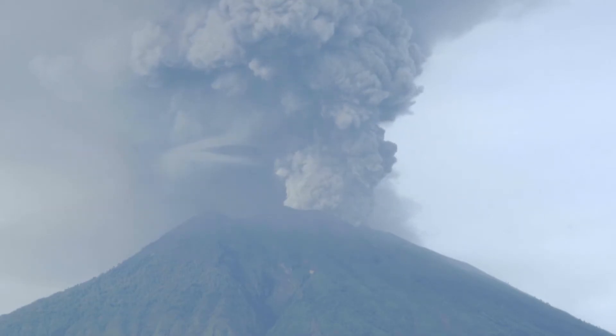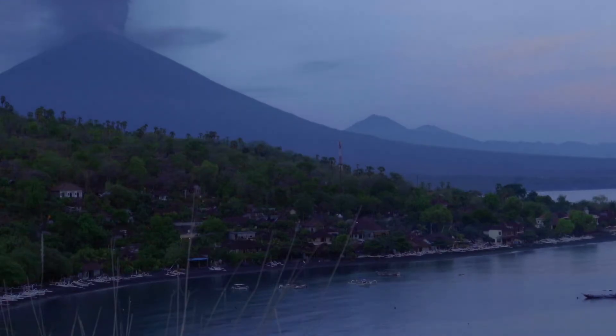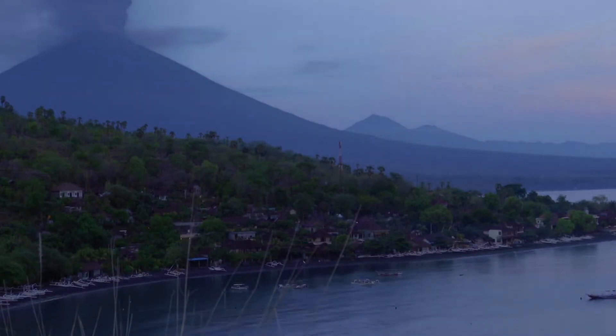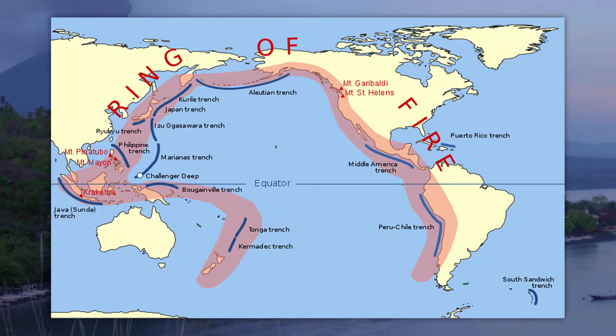They occur at all three types of plate margin: constructive, destructive, and conservative. Many earthquakes occur on the edges of the Pacific Ocean, along what's known as the Ring of Fire.